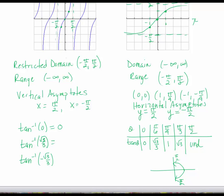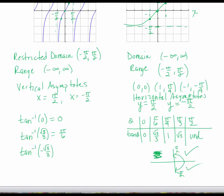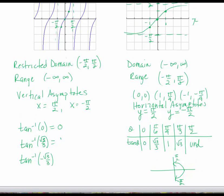Remember, the input is a trig ratio and the output is an angle. There are infinitely many angles with tangent of square root of 3 over 3, but only one is between negative pi over 2 and pi over 2, which is pi over 6. The inverse tan of a negative number is always the opposite of the inverse tan of that positive ratio, so inverse tan of negative square root of 3 over 3 is negative pi over 6 — a fourth-quadrant angle. For inverse sine and inverse tan, a negative trig ratio gives a negative acute angle.